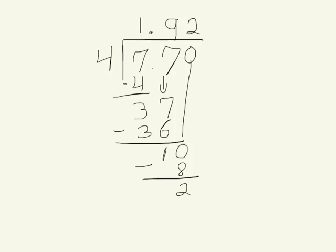And I know that my 2 hundredths is exactly the same amount as 20 thousandths. I can take my 2 hundredths and exchange it for 20 thousandths. 4 goes into 20 thousandths 5 times. 5 thousandths times 4 is 20 thousandths. I have no thousandths left over. 7 and 7 tenths divided by 4 is 1 and 925 thousandths.